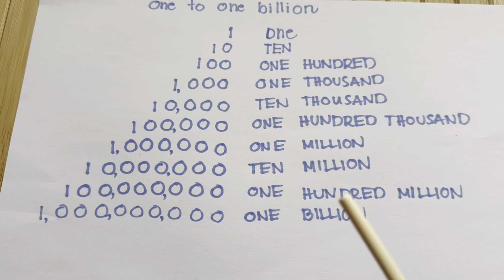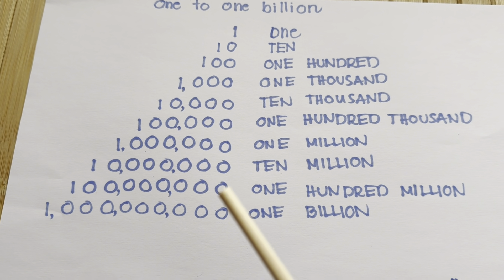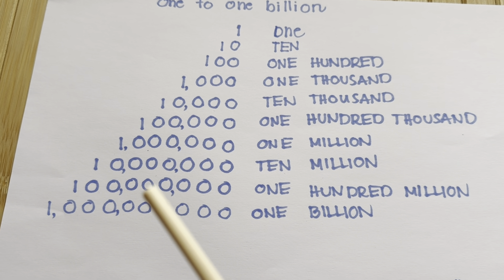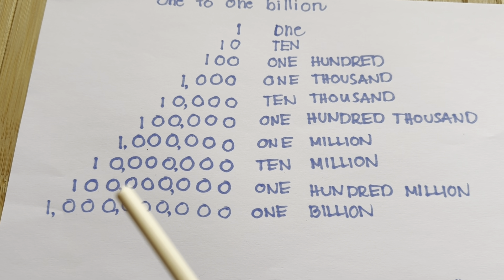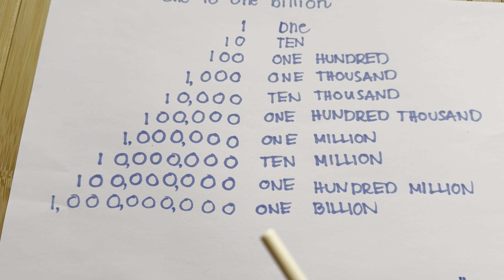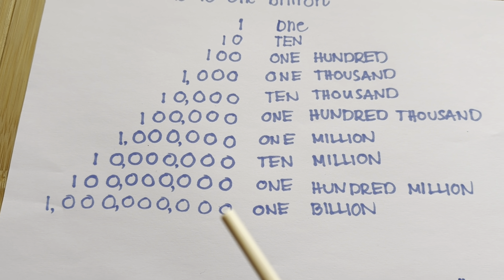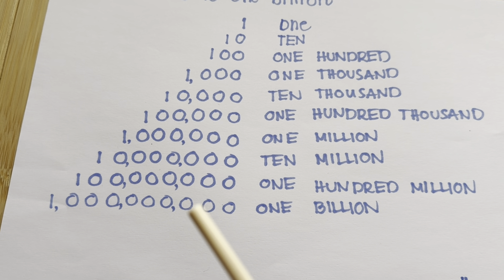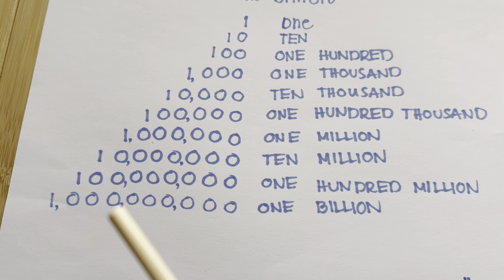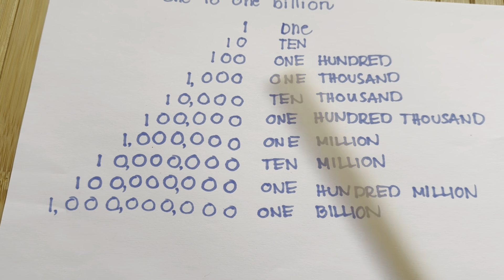In one hundred million, we have one, two, three, four, five, six, seven, eight zeros. And lastly, in one billion, we have one, two, three, four, five, six, seven, eight, nine zeros.